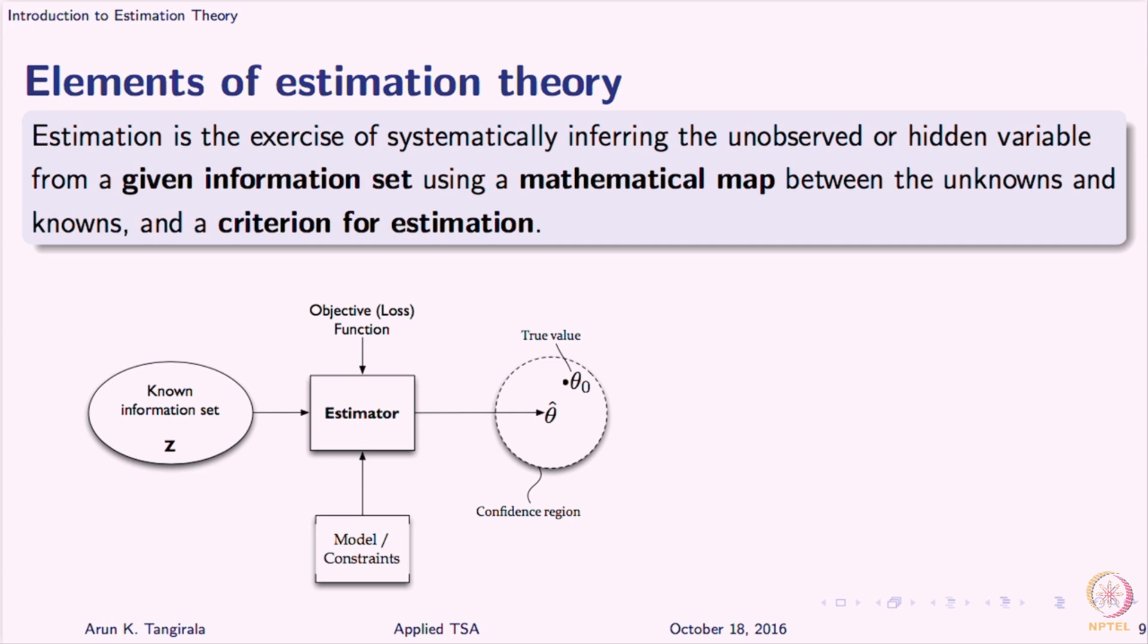So if you see on the left, we have what is known as known information and this known information should not be thought of as only data. It includes any other prior information you may have of the parameters or of the process, everything constitutes this known information, but by and large when we say information, the minimal thing that you are looking for is data. By data, I mean observations at least in the time series context. Given these observations which is the food for estimation, no data, practically no estimation. So data is the food for estimation and we will come back to that statement a bit later.